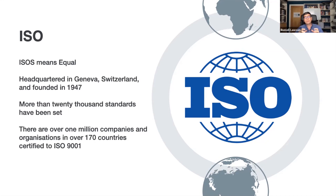ISO is headquartered in Geneva, Switzerland, founded in 1947. It's more like an umbrella organization whose members are standard-setting organizations from some 164 different countries. It's by far the world's largest developer of voluntary international standards, with more than 20,000 standards covering everything from manufactured products and technology to food safety, agriculture, and healthcare.